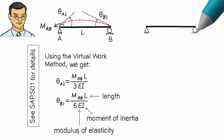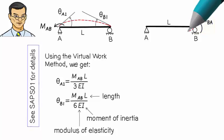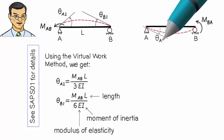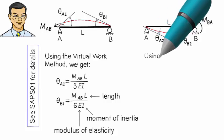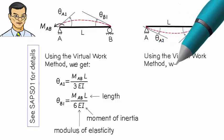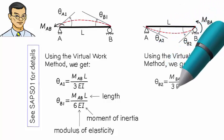Let's examine the beam one more time. But this time, place the positive counter-clockwise moment at B, like this. I am going to refer to this bending moment as MBA. The beam is going to deflect downward, like this. I am going to denote the end rotations as theta A2 and theta B2. Similar to the first loading case, we can determine the two end rotations in terms of MBA using the virtual work method. Here are the expressions for theta B2 and theta A2.